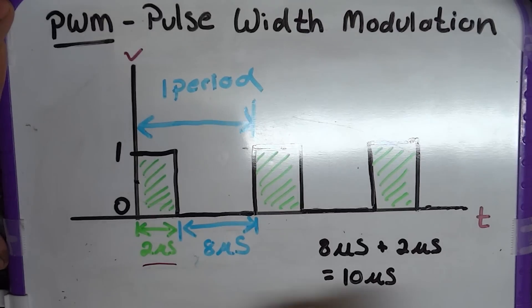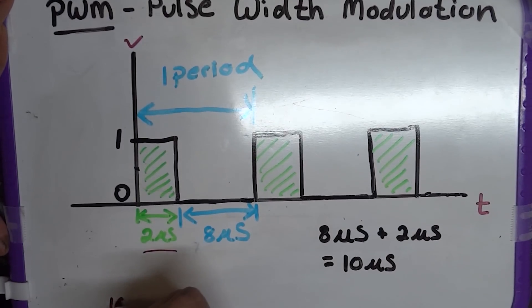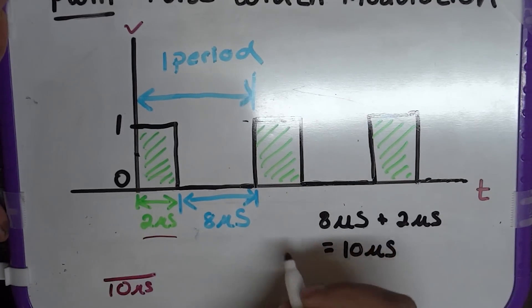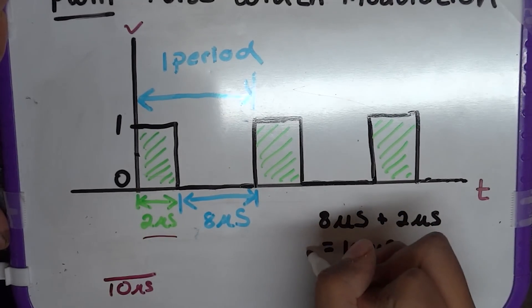So, we have the total time of 10 microseconds. So, we'll put it into a fraction. We have 10 microseconds on the bottom. By the way, this is the period. So, we'll mark it as P.